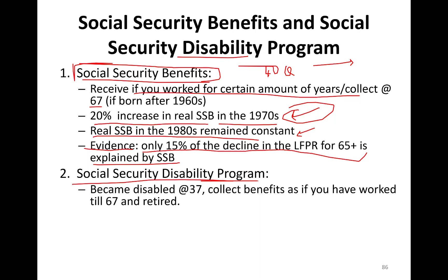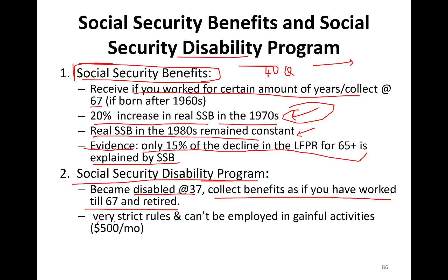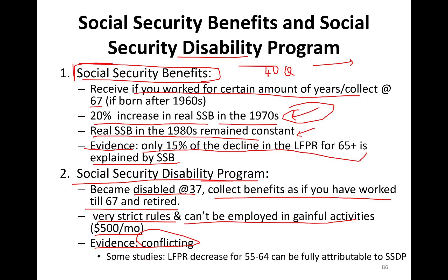Now let's talk about the Social Security Disability Program. If an individual becomes disabled at age 37, they collect benefits as if they had worked until age 67 and retired. However, it's not easy to get these — there are strict rules: you can't be employed in gainful activities. The empirical evidence is conflicting on whether the Social Security Disability Program contributes to low labor force participation. Some studies find a decrease for those aged 55 to 64 is attributable to it; other studies find no impact.